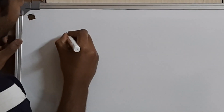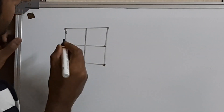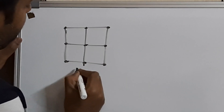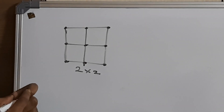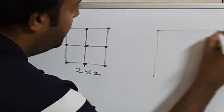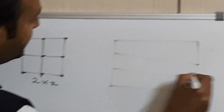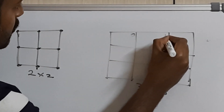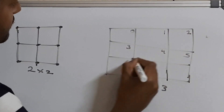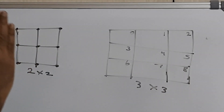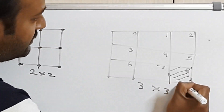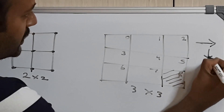Let us start with the 2 by 2 grid from video number 1. In a 2 by 2 grid, you have exactly 9 joints. Leveraging the representation structure, I will draw a 3 by 3 grid where each cell captures each joint — 0, 1, 2, 3, 4, 5, 6, 7, and 8. The question is: how can you start from cell number 0 and reach the target cell 8, obeying the constraints that you can only go right or down?